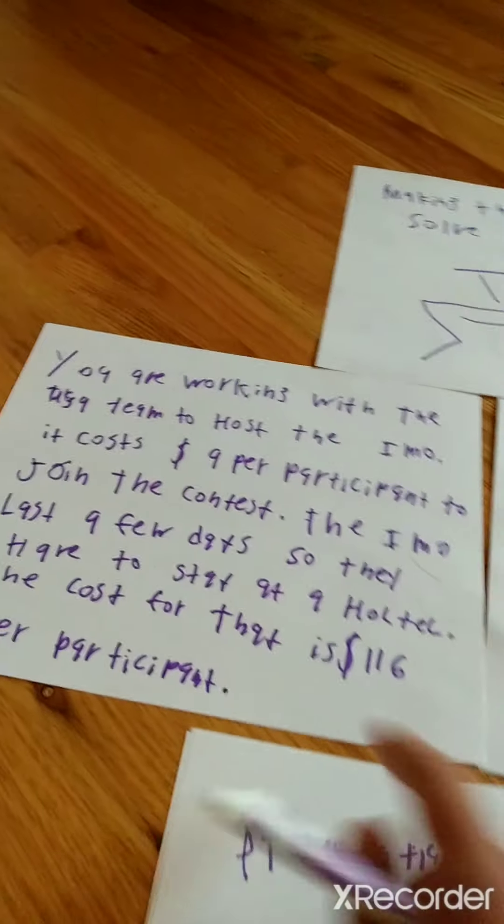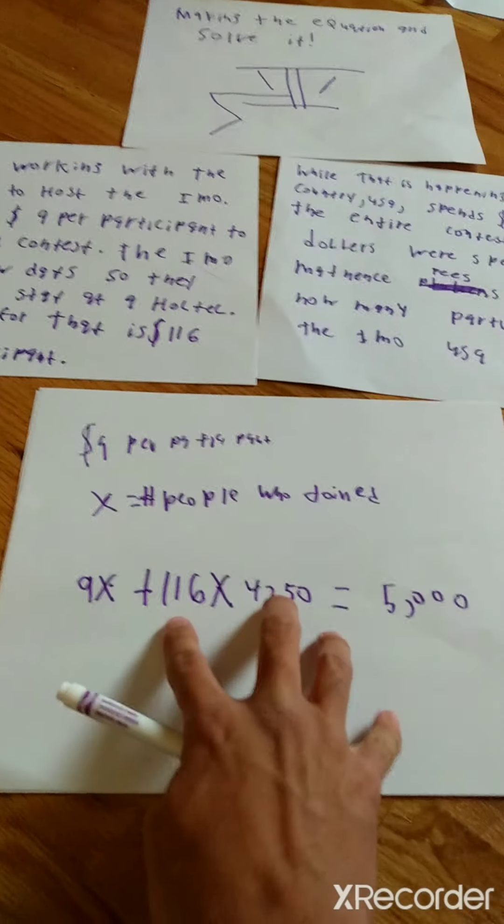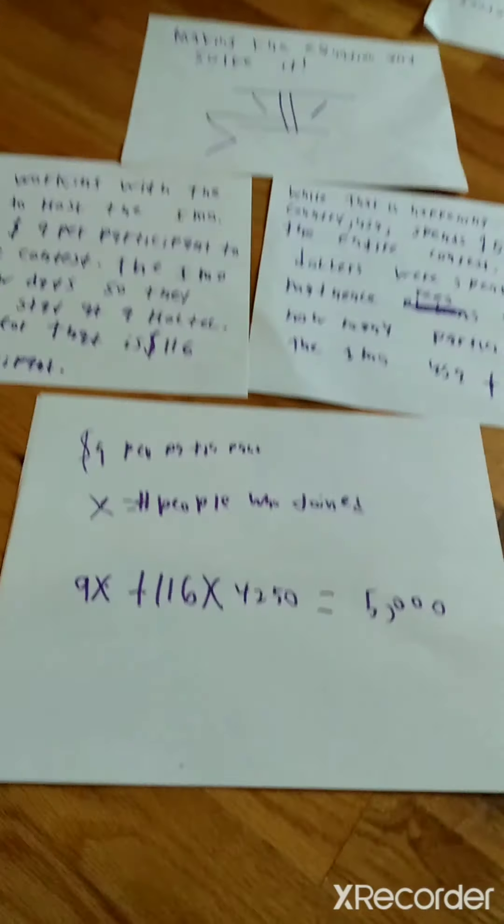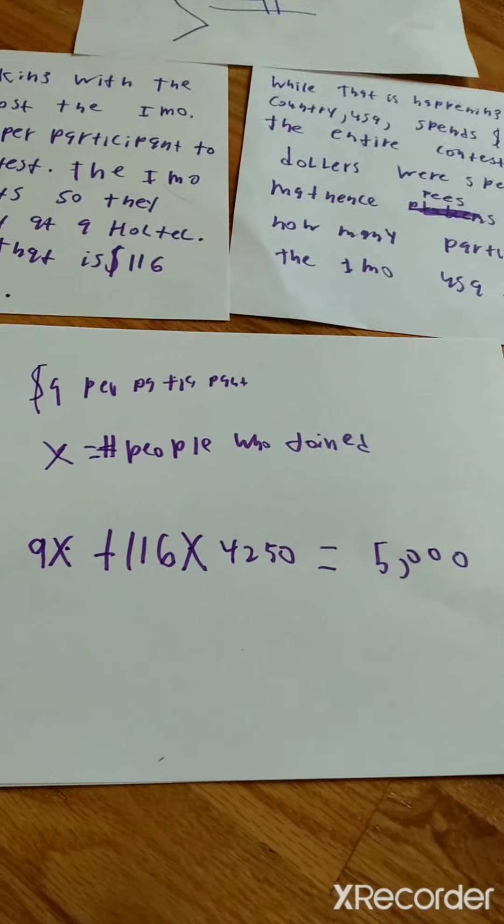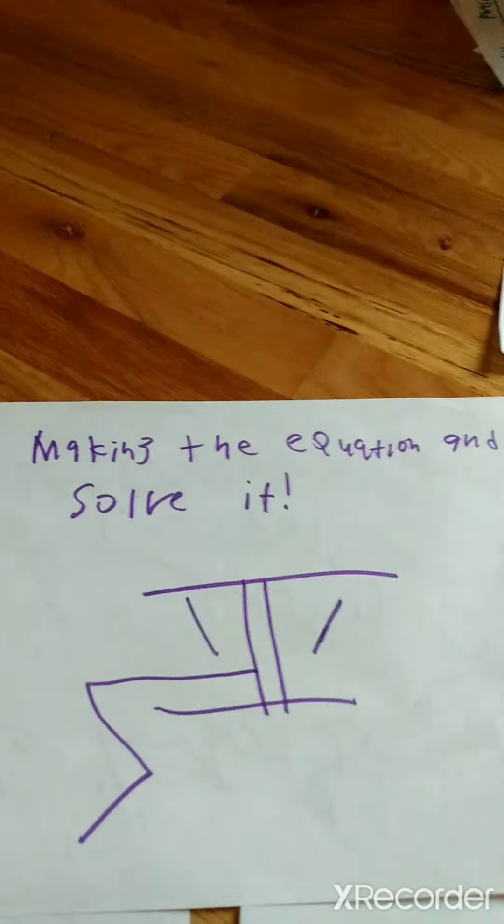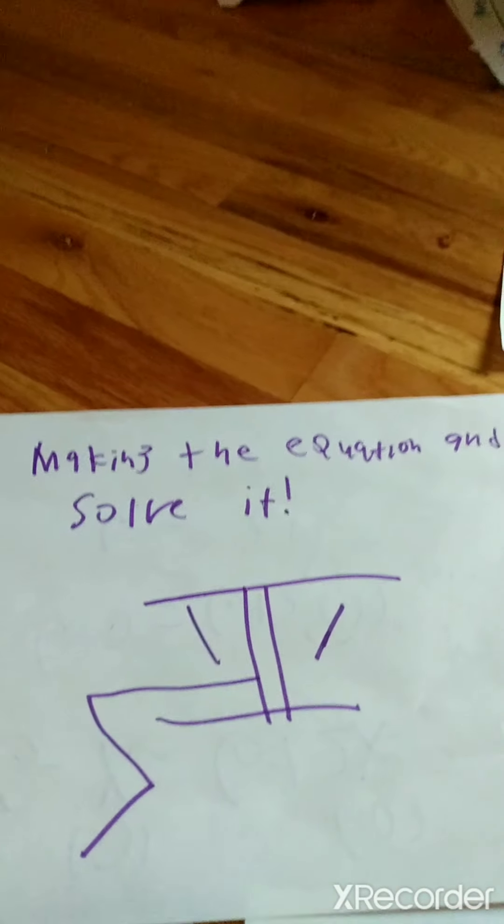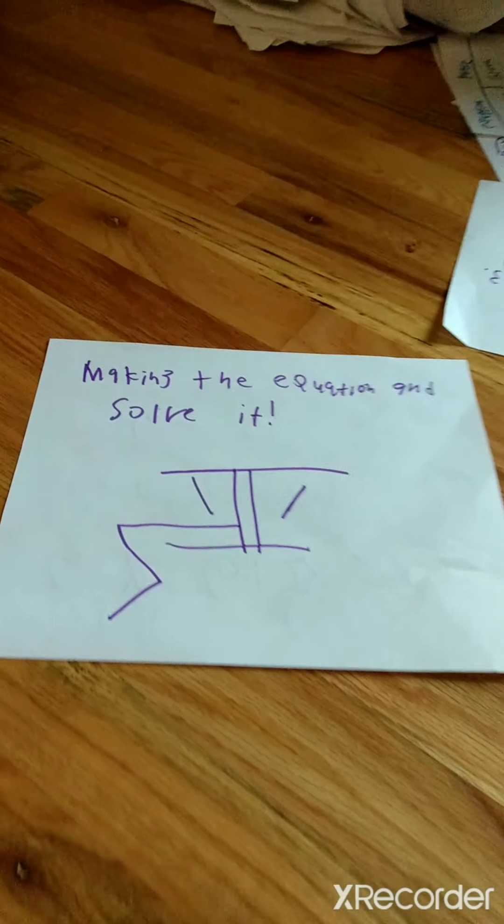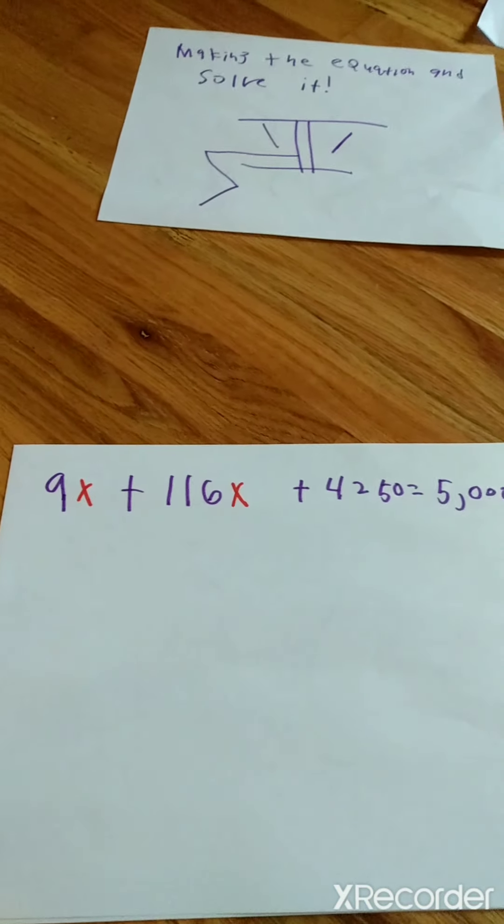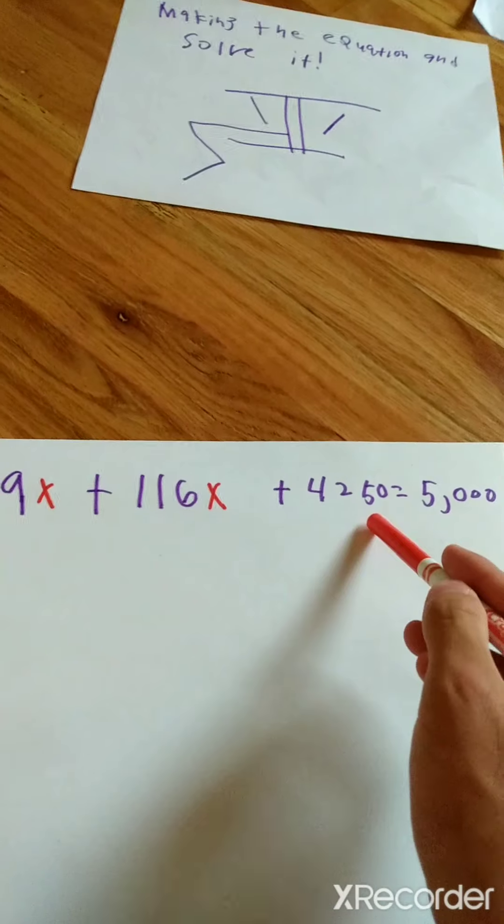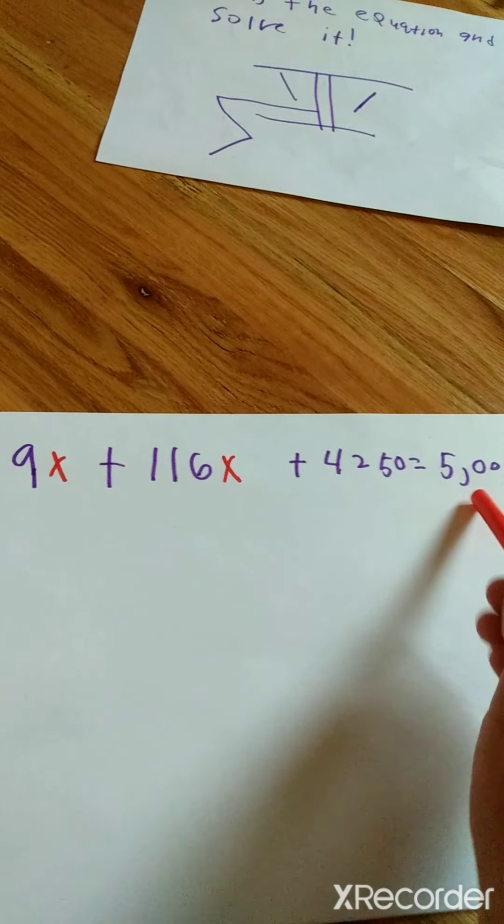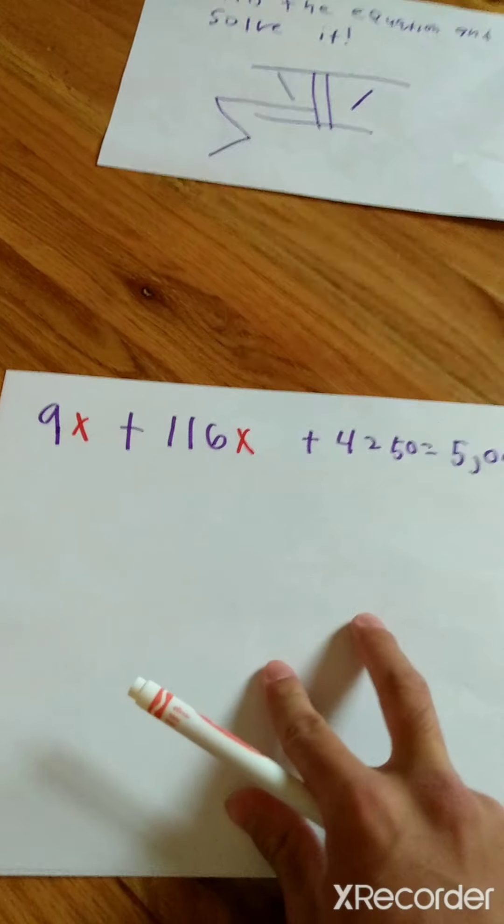What we did is found key clues from the word problem, and we came up with an equation that can explain everything. Let's try and solve this equation that we have just made. So we have made the equation. Now we have to solve it! So here's our equation. 9X plus 116X plus 4,250 equals 5,000. How many people joined the USA team?